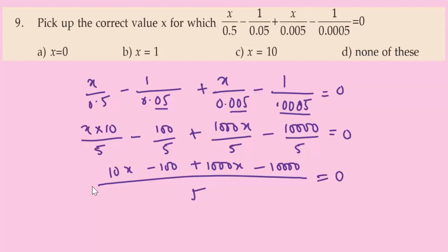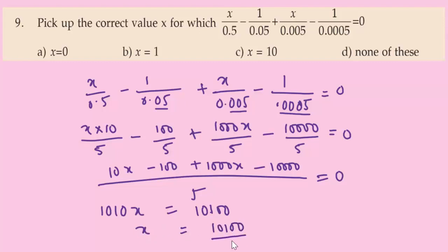Combining: 1010X equals 10100. So X equals 10100/1010, which simplifies by dividing both by 10, giving X equals 10. Option C is the correct answer.